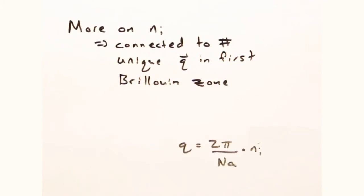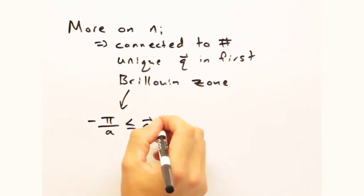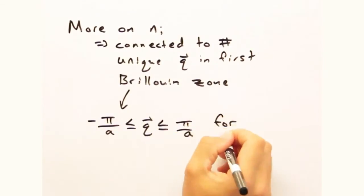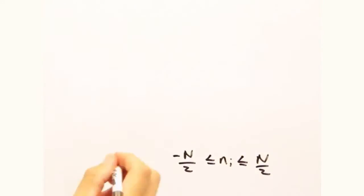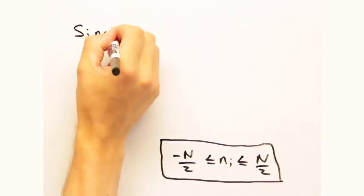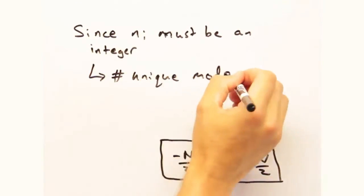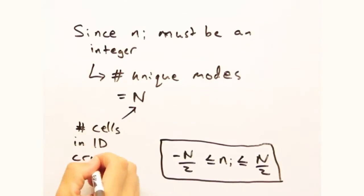We also see that our Q vectors are related to our reciprocal lattice vectors times our pre-factor. And since we know Q is bounded by minus pi over A to pi over A for unique solutions, how will n i be bounded? Well, we have an equation for q in terms of n i. So after some plug and chug, we get that n i is bounded by minus capital N over 2 to capital N over 2. Since there is a unique mode at each n i, and n i is an integer, the total number of modes is always equal to the number of cells in our 1D crystal.